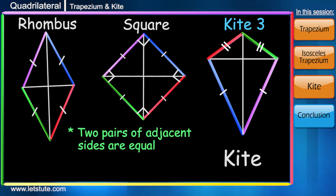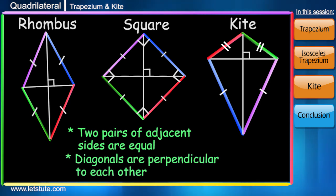There is one more property which is only found in kite: we can see its diagonals are perpendicular to each other. Precisely speaking, one of the diagonals is a perpendicular bisector of the other.